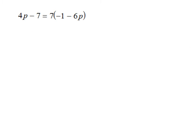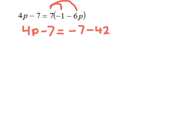The first thing I need to do is simplify both sides of the equation. The left side, 4p minus 7, is already simplified. On the right side, there is a 7 outside the parentheses, so I distribute the 7 to both terms: 7 times negative 1 is negative 7, and 7 times negative 6p is negative 42p.